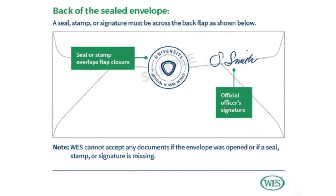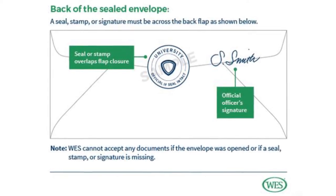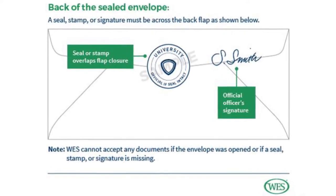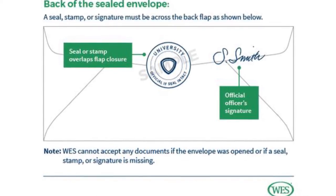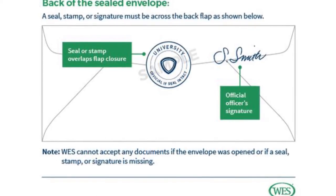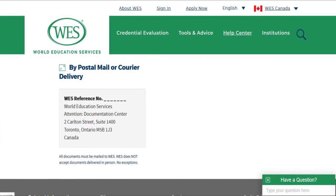Collect your transcript and the envelope that you submitted from the university. Make sure your university has signed or stamped across the flap of the envelope — this is applicable regardless of which country you belong to, and it is mandatory. After that, you can fill in the two address as the WES address shown on the screen. Make sure you enter your WES reference number as the first line, as this will be used by WES employees to map the transcript to your application.